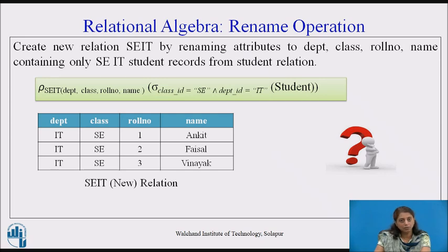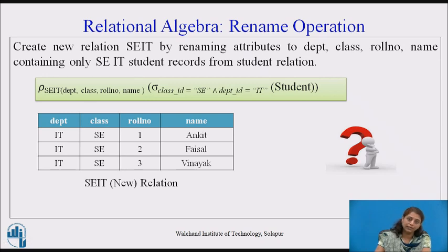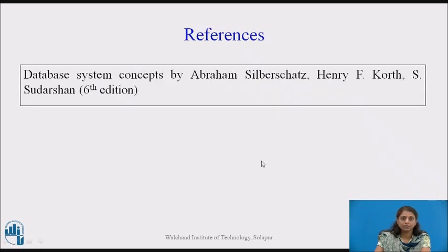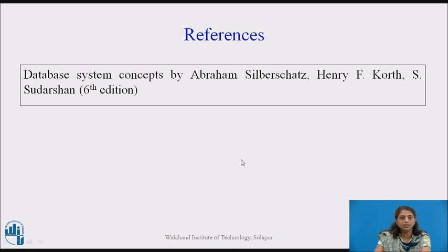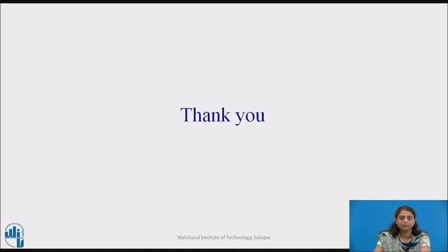Today we have seen three operations in relational algebra — select, project, and rename — which are unary operations. In the next lecture we will see binary operations. Thank you.